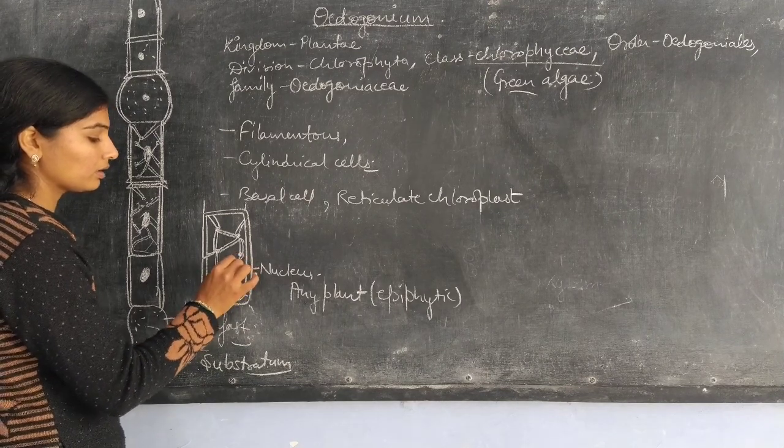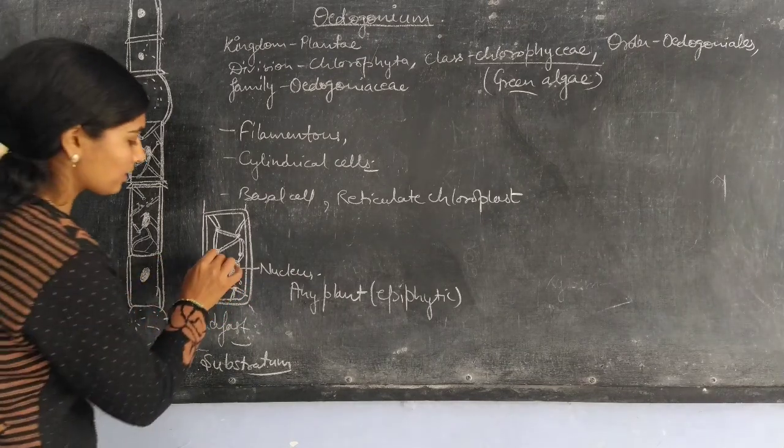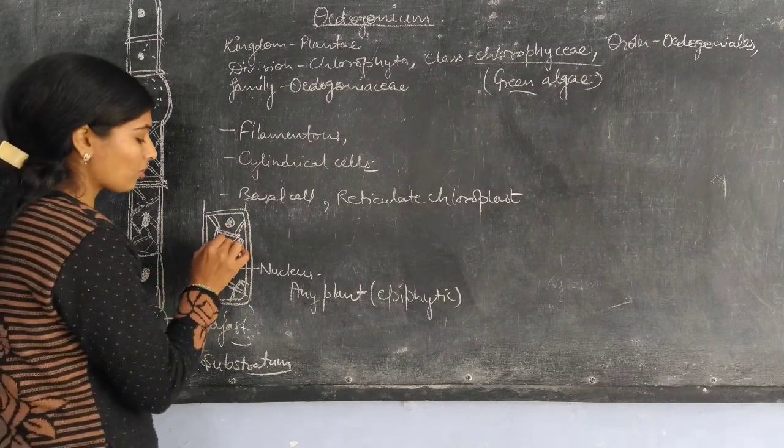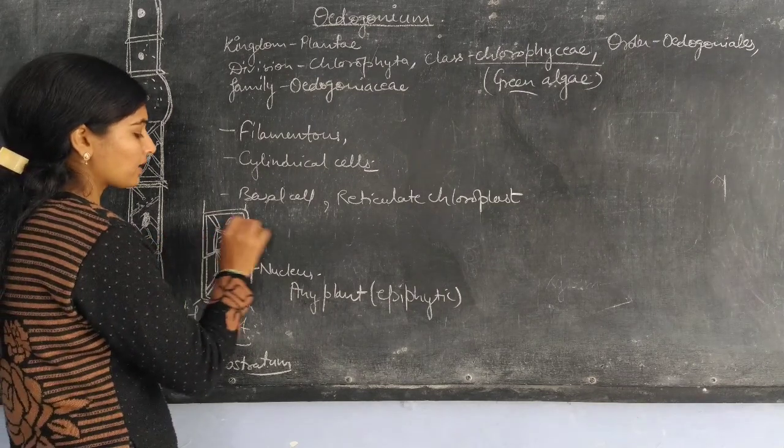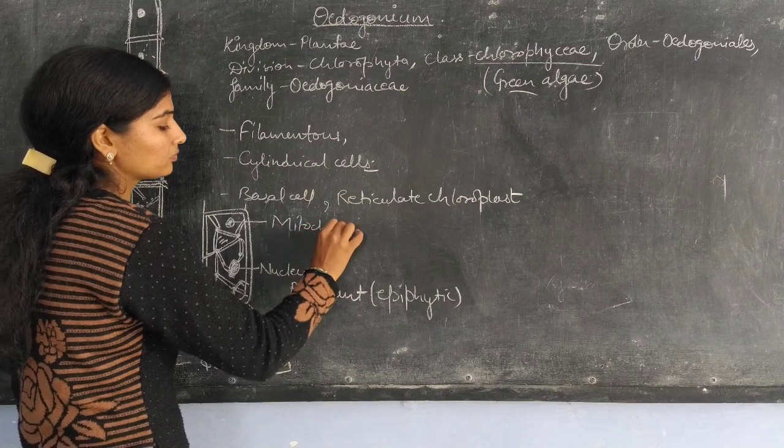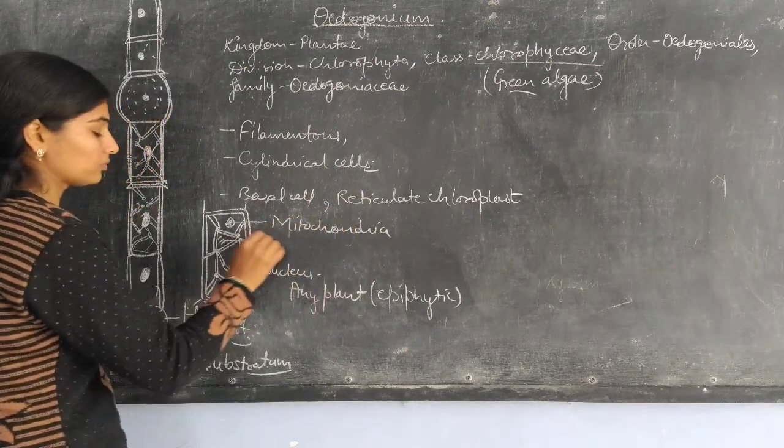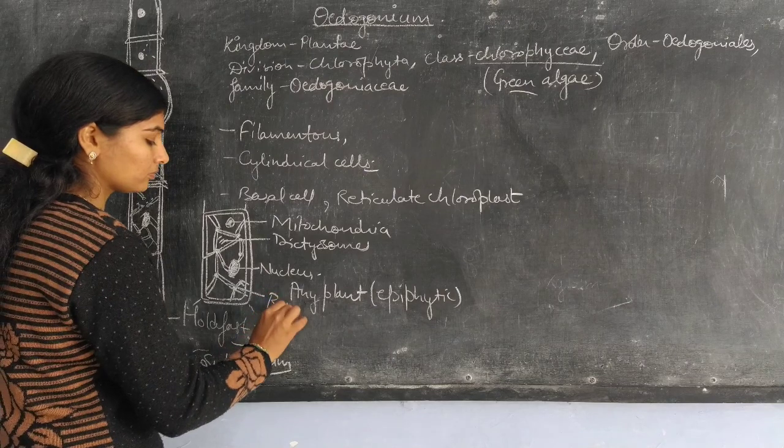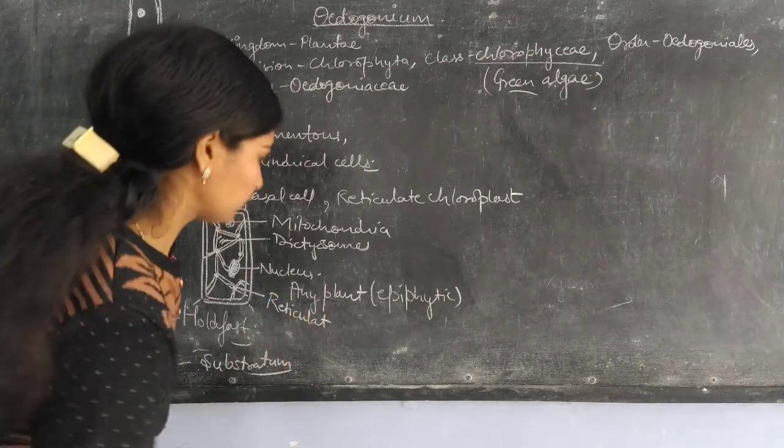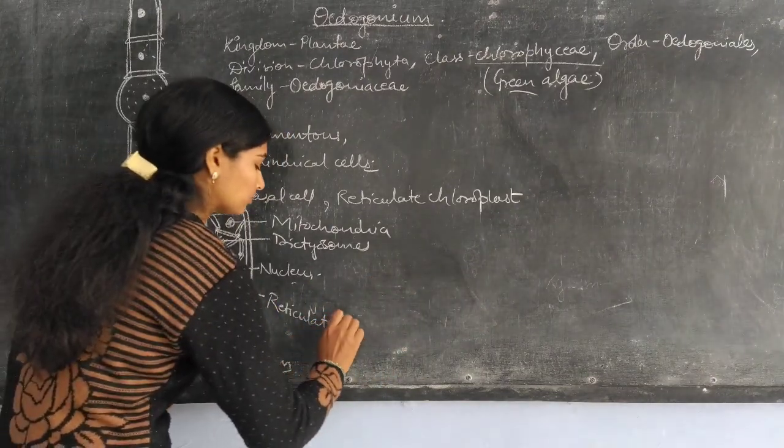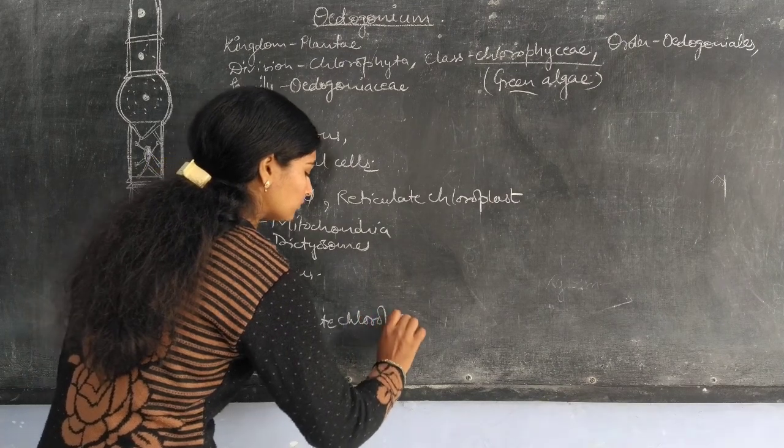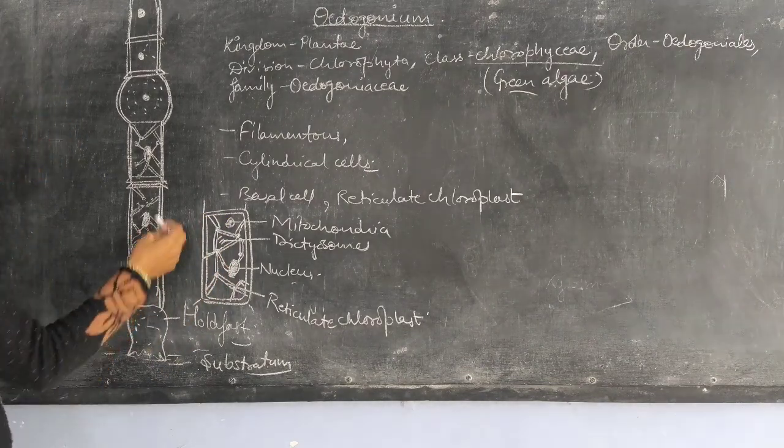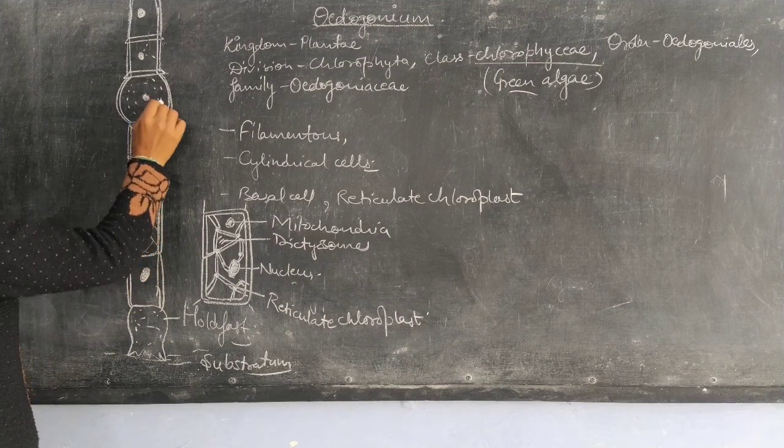Other organelles such as mitochondria and dictyosomes are present. So this is the cell of Oedogonium, and these cells are arranged one above the other. These are vegetative cells.